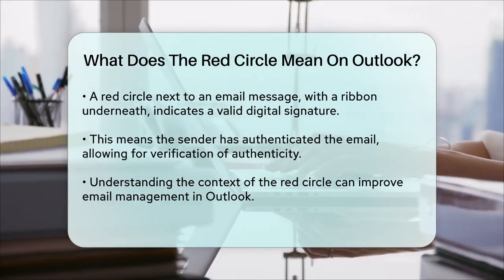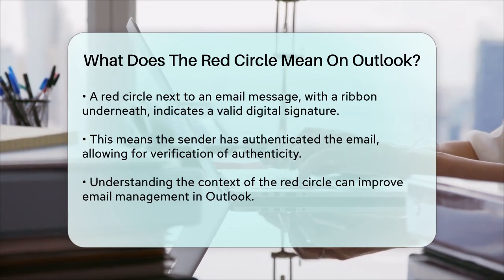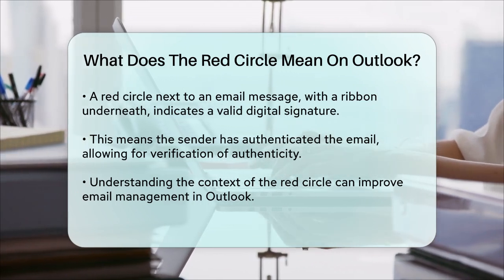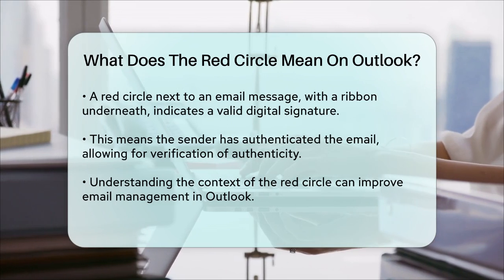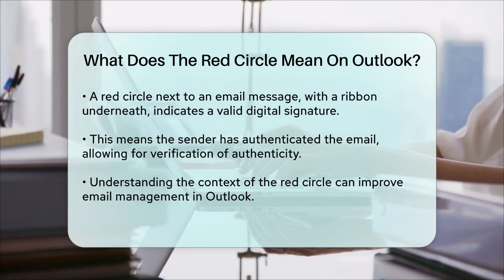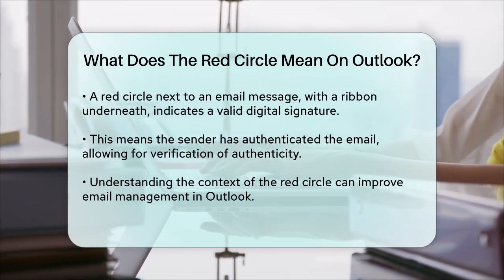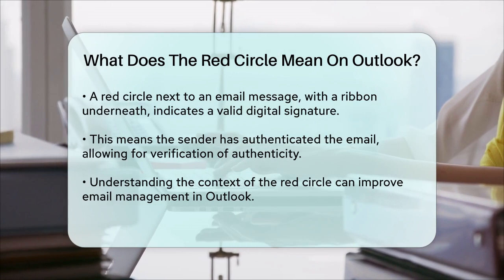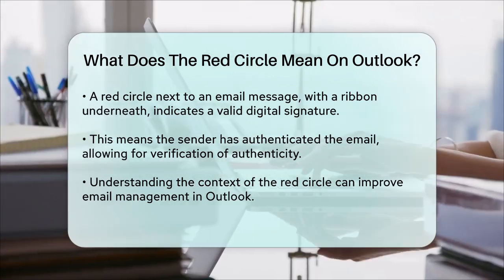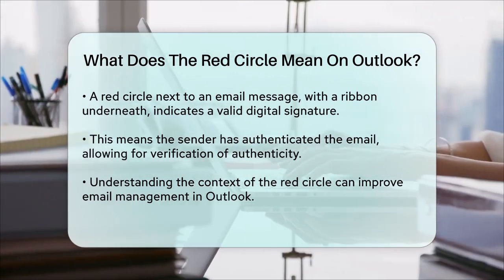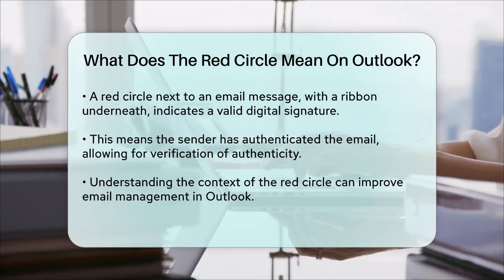So the next time you see a red circle in Outlook, take a moment to check the context. It could be related to junk mail settings, contact availability, or even digital signatures on emails. Each of these icons serves a specific purpose, and understanding them can help you manage your emails more effectively.